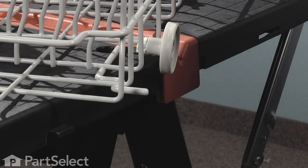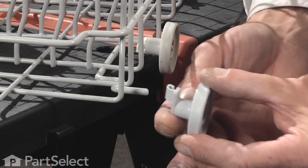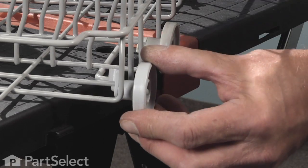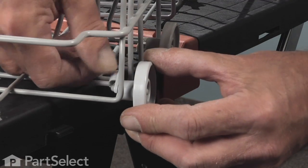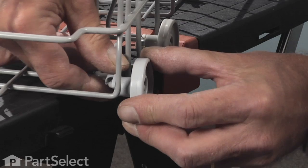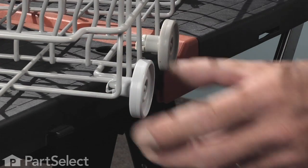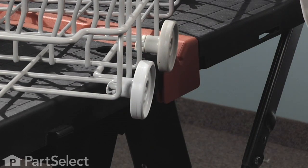To reinstall our new wheel, slide it over the shaft and rotate the locking tab back down onto the tine, and the repair is complete.